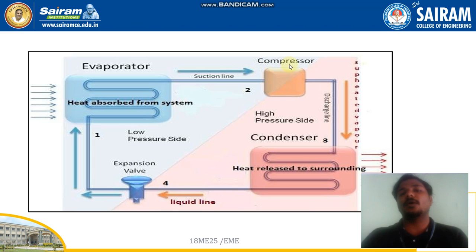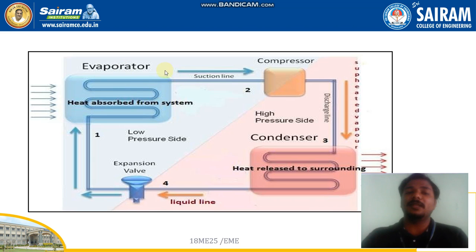After coming from the compressor, the refrigerant moves to the condenser. When it reaches the condenser, the vapor is at high temperature and high pressure. To recap: it started with low temperature and low pressure, changed phase from liquid to vapor, then the compressor compressed it, increasing the pressure and therefore the temperature. Now this high pressure, high temperature refrigerant reaches the condenser, which releases the heat content present in the refrigerant to the surroundings.